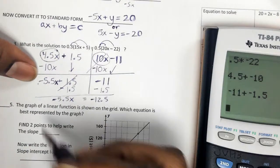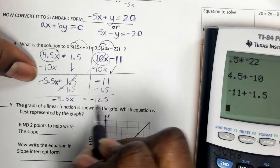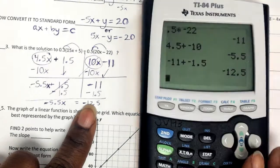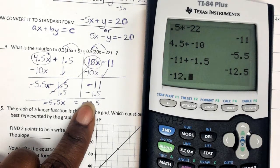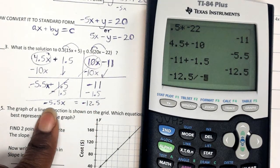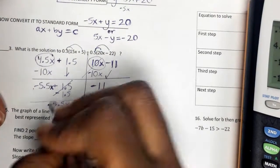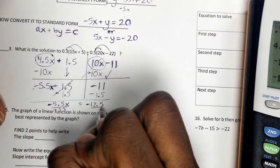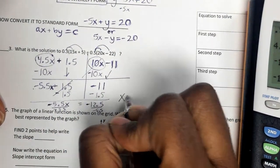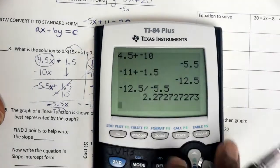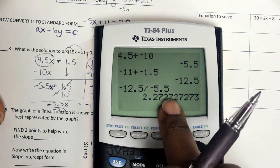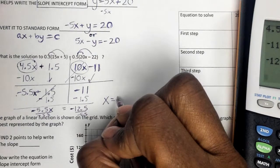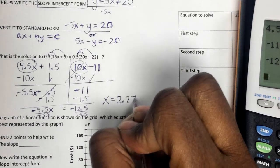And now I'm finally at the end. I only got one term here and one term here. I can take this term, negative 12.5, and divide it by negative 5.5. Yes, when you divide, you keep the same sign. Divide by negative 5.5. So x equals 2.272727. Okay, so that's just 2.27 as a decimal.